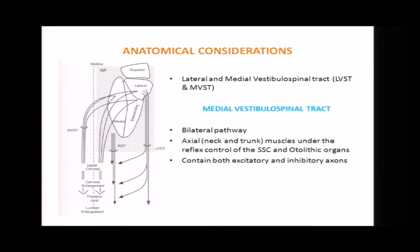The medial vestibulospinal tract fibers mostly terminate in the cervical cord, but a part travels downward toward the thoracic segment. They generally bring the axial structures — that is, the neck and trunk — under the control of the labyrinth, but not the limbs.